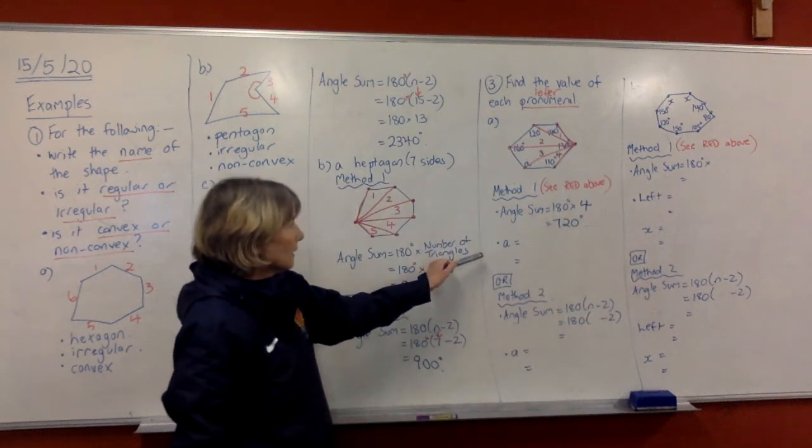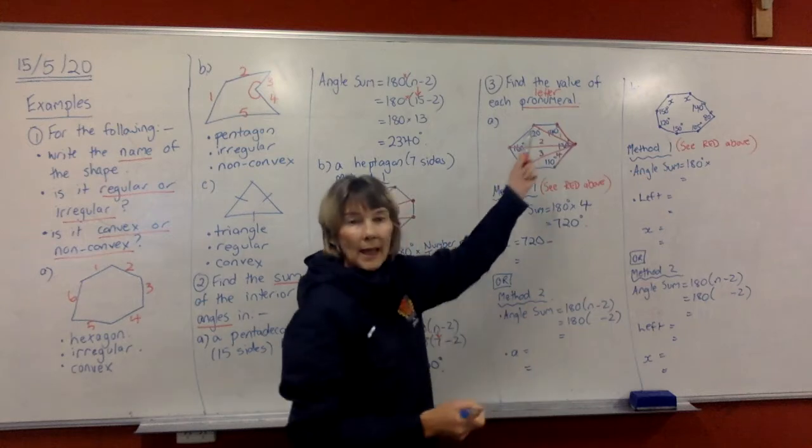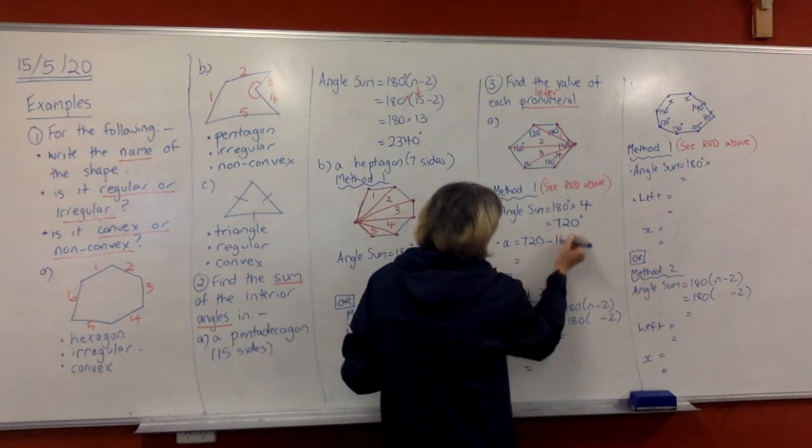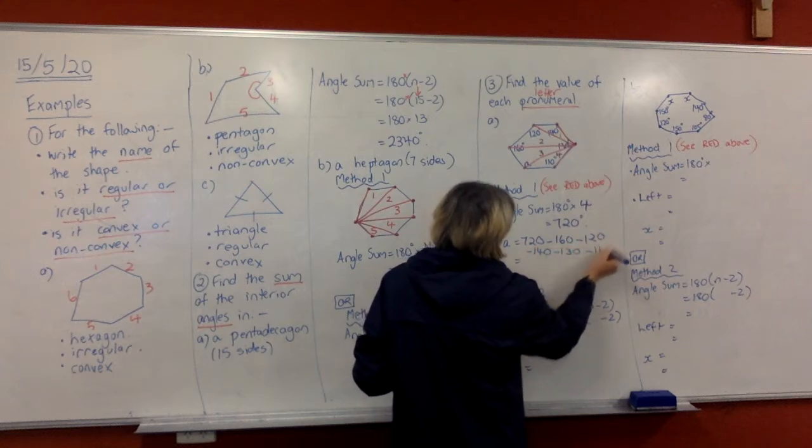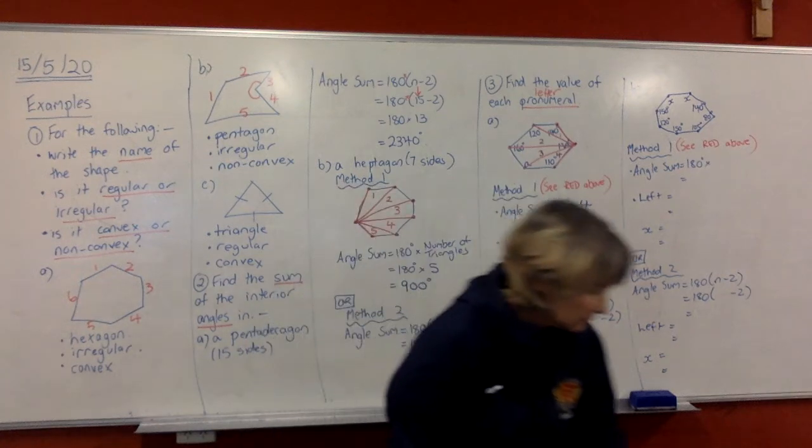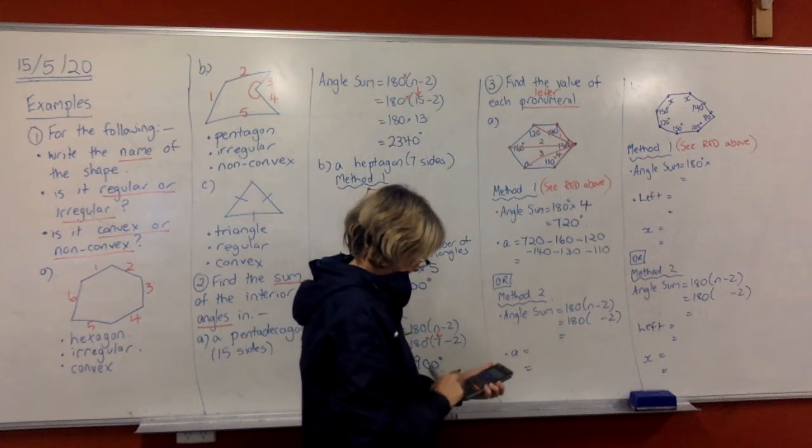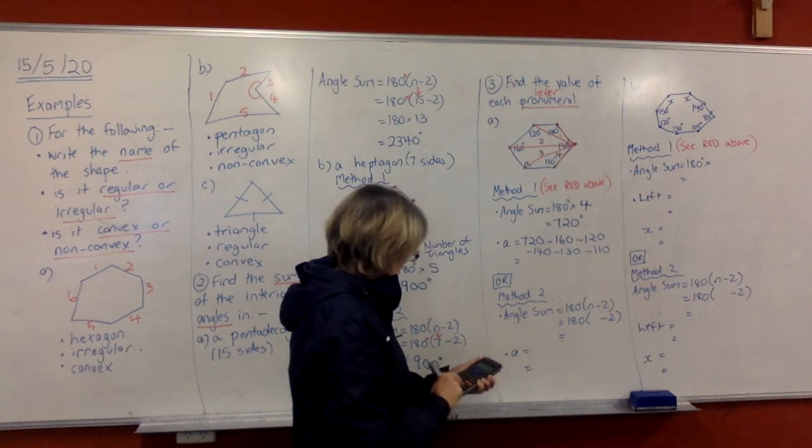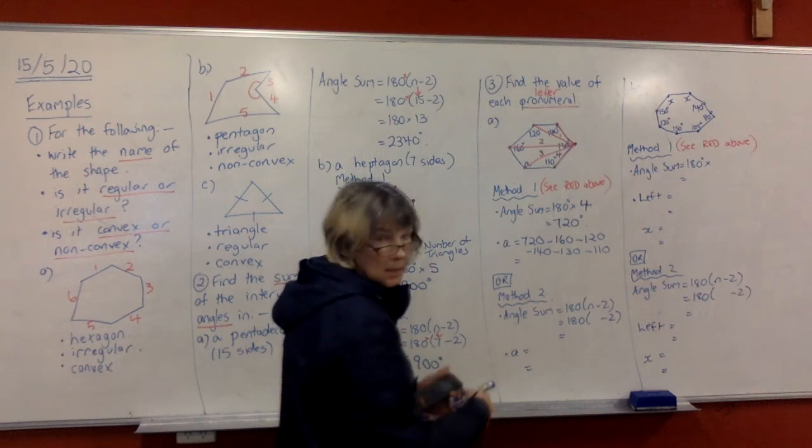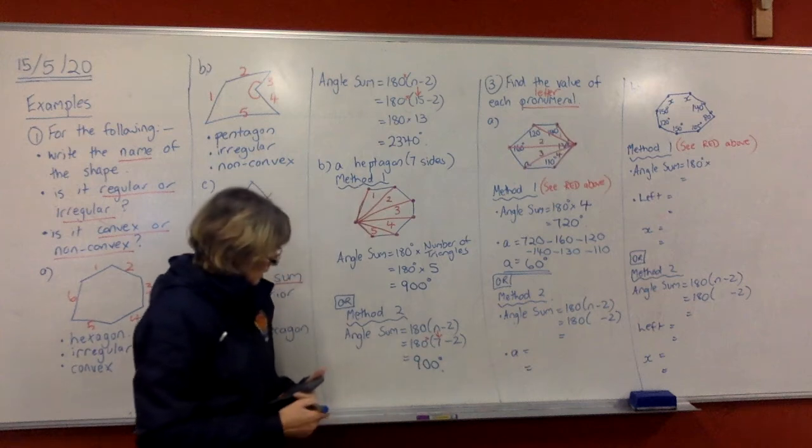So it's 180 degrees for each triangle and we have four of them. If you multiply those on your calculator, you'll get 720 degrees. So to find A, we know that all these angles are going to add up to 720. So we're going to start with 720 and take off all these angles I've already given you: 160, 120, 140, 130 and 110. And now I'm going to get my calculator and look at what that is. And it's 60 degrees. I know it doesn't look like it on my diagram, but it is 60 degrees.